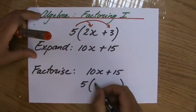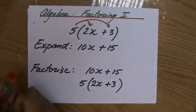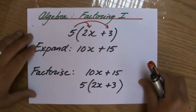That would be 5 brackets. I'm factorizing, so I'm putting it in those brackets: 2x plus 3. Finished. So that was just an introduction. What is factorizing? Factorizing is putting it inside the brackets.